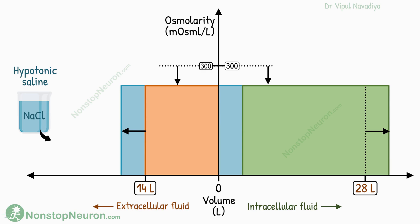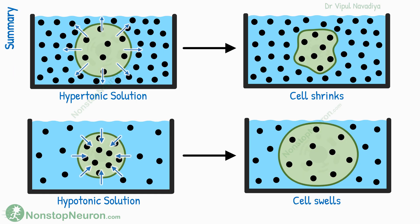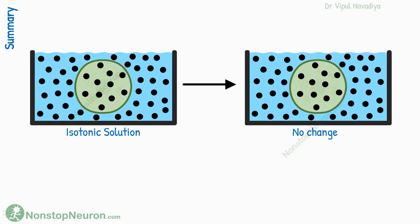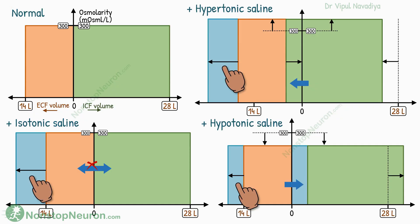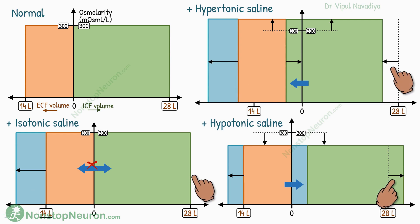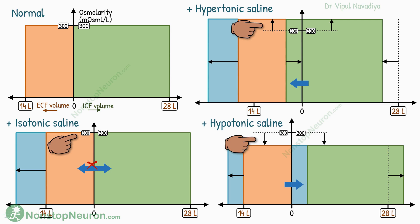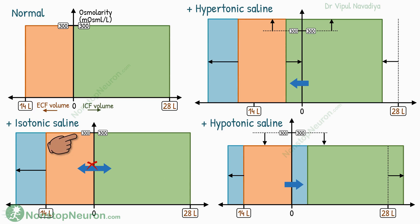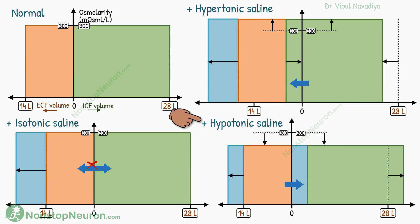So that was all about fluid exchange between extracellular and intracellular fluid. Quick summary: In a hypertonic solution, the cell loses water and shrinks. In a hypotonic solution, water enters the cell so the cell swells. In an isotonic solution, there is no change in cell volume. Adding any solution to extracellular fluid increases its volume; however, the effect on intracellular fluid volume and osmolarity depends on the tonicity of the added solution. Adding an isotonic solution causes no change in intracellular fluid volume or osmolarity. Adding a hypertonic solution causes water to move out of the cells, decreasing intracellular fluid volume and increasing osmolarity all over the body. Adding a hypotonic solution causes water to move into the cells, increasing intracellular fluid volume and decreasing osmolarity all over.